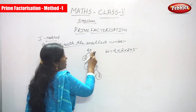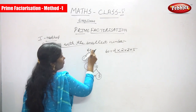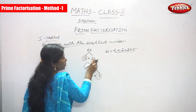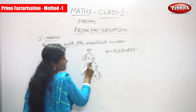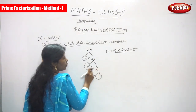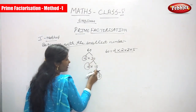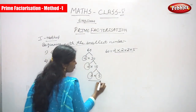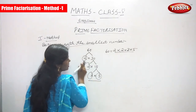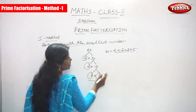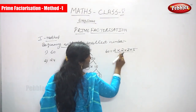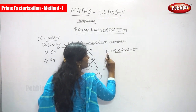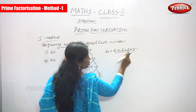To repeat: 60 is given in the question. First, divide by 2 — 2 into 30 gives 60. Then 30 divided by 2 gives 15, so 2 into 15 gives 30. Then 15 divided by 3 gives 5, so 3 into 5 gives 15. The factors are 2, 2, 3, and 5 — joined together: 2 into 2 into 3 into 5. The answer for 60 is 2 × 2 × 3 × 5.